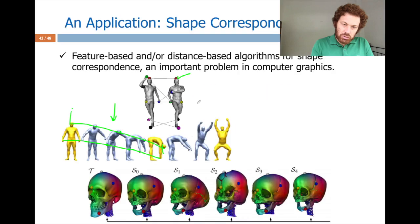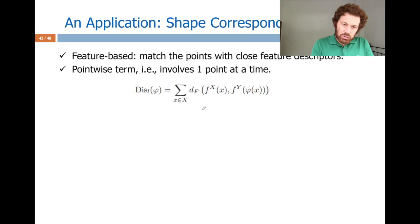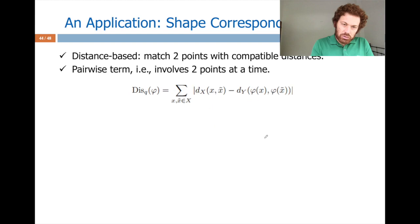Wrapping up with descriptors for correspondence. A pointwise term: take a point x with an SDF value of 82; its mapped counterpart in shape y has SDF 60 — a difference of 22, indicating a bad match. This is the pointwise feature-based matching idea. There is also a pairwise term, which makes matching more robust by considering two points at a time.